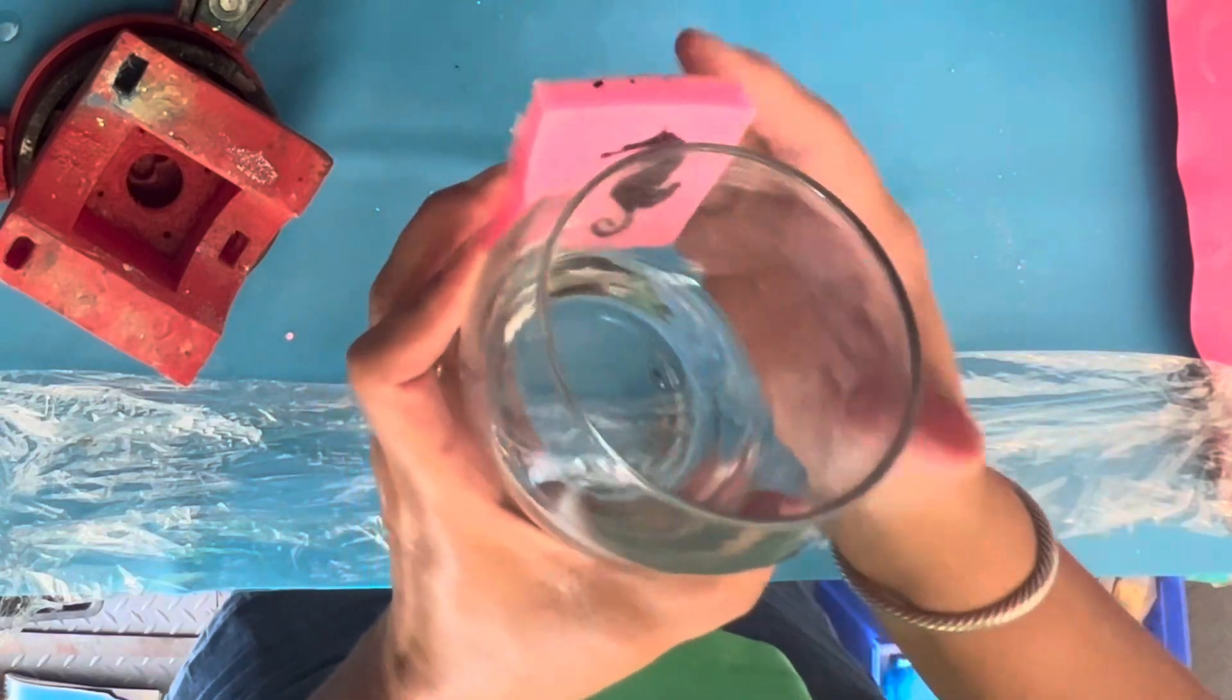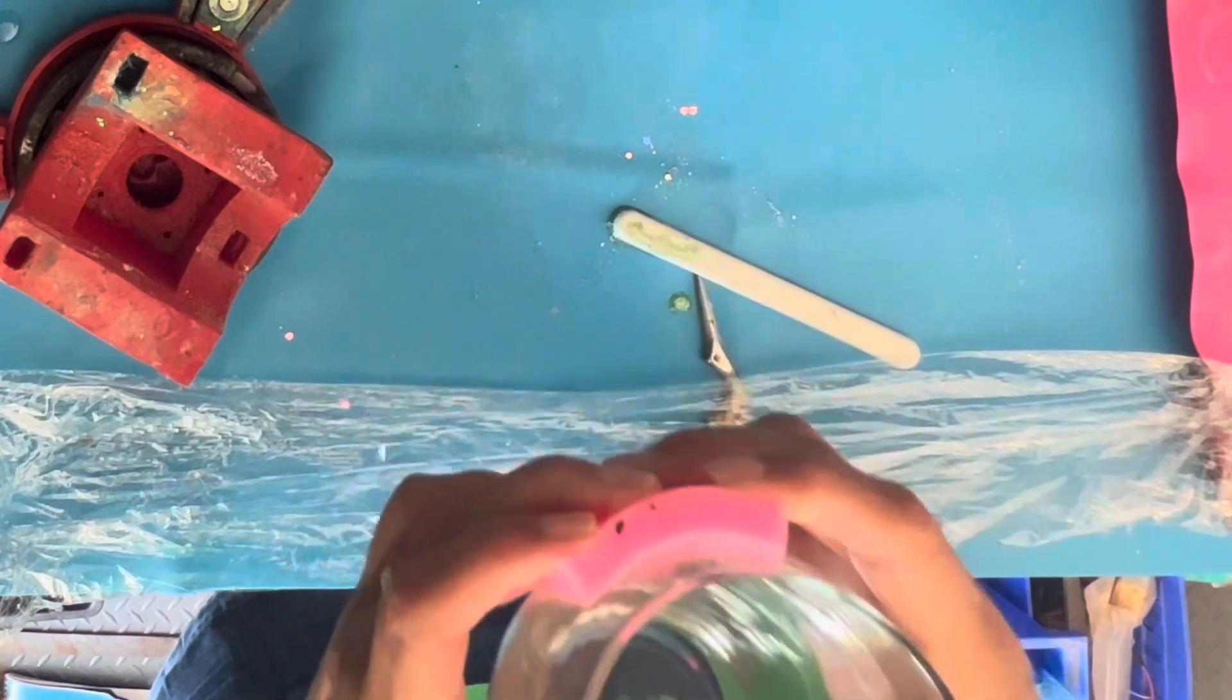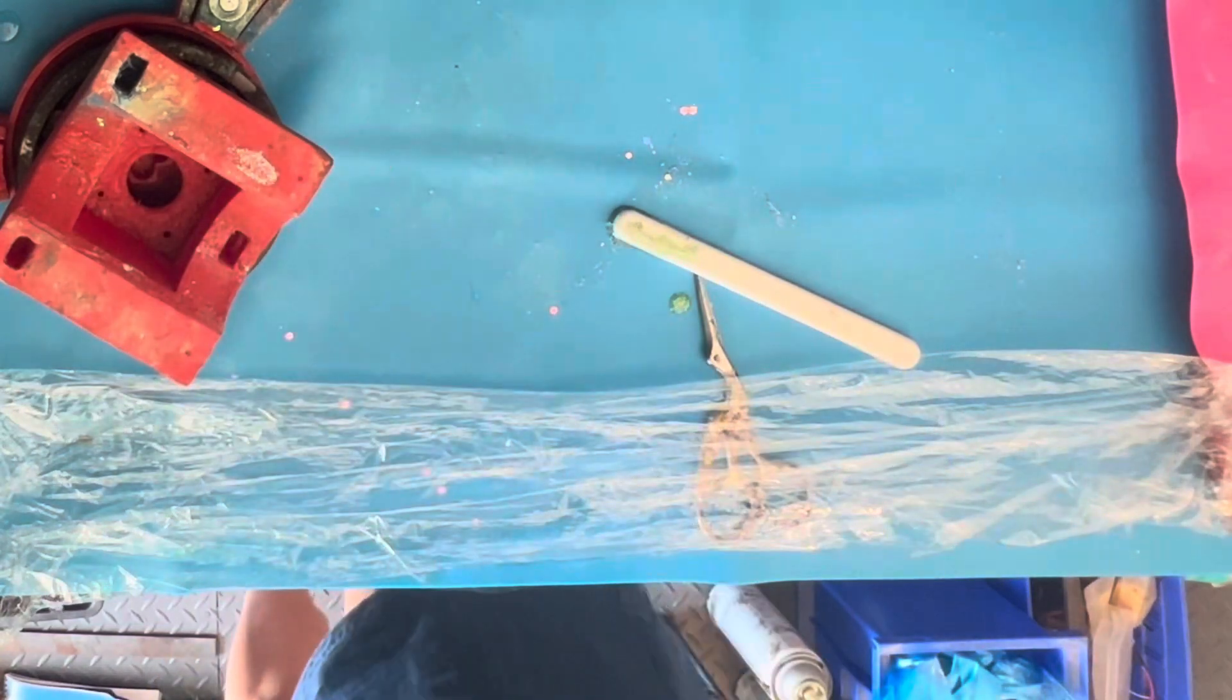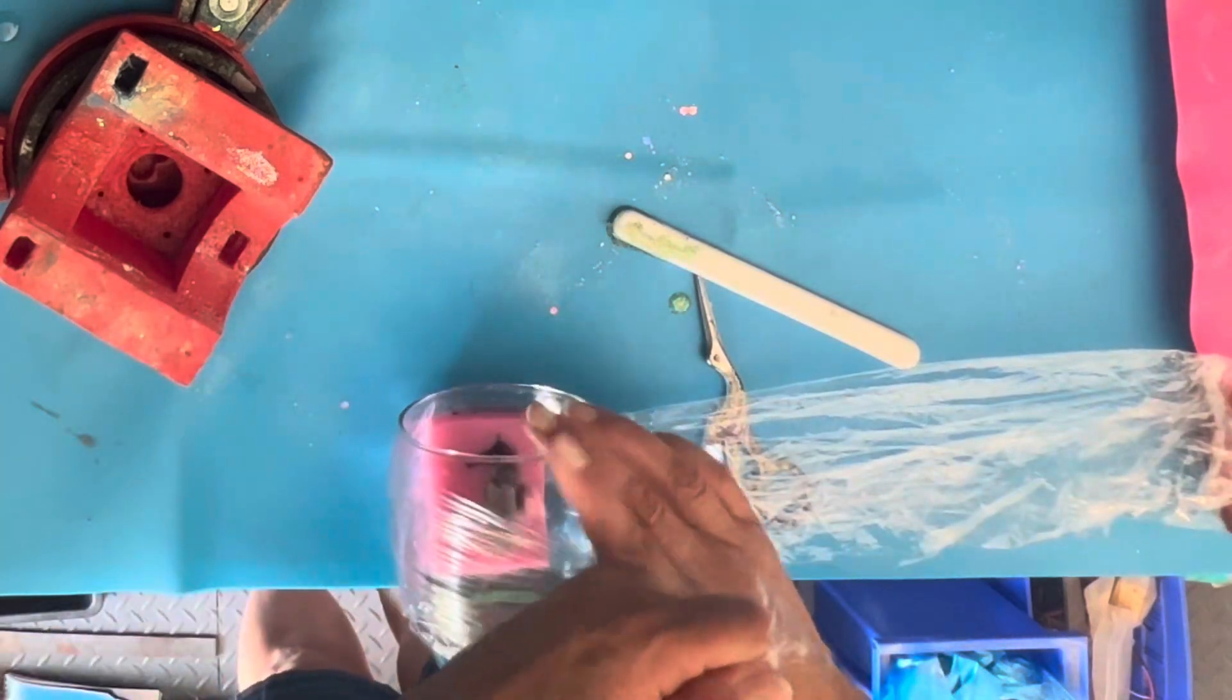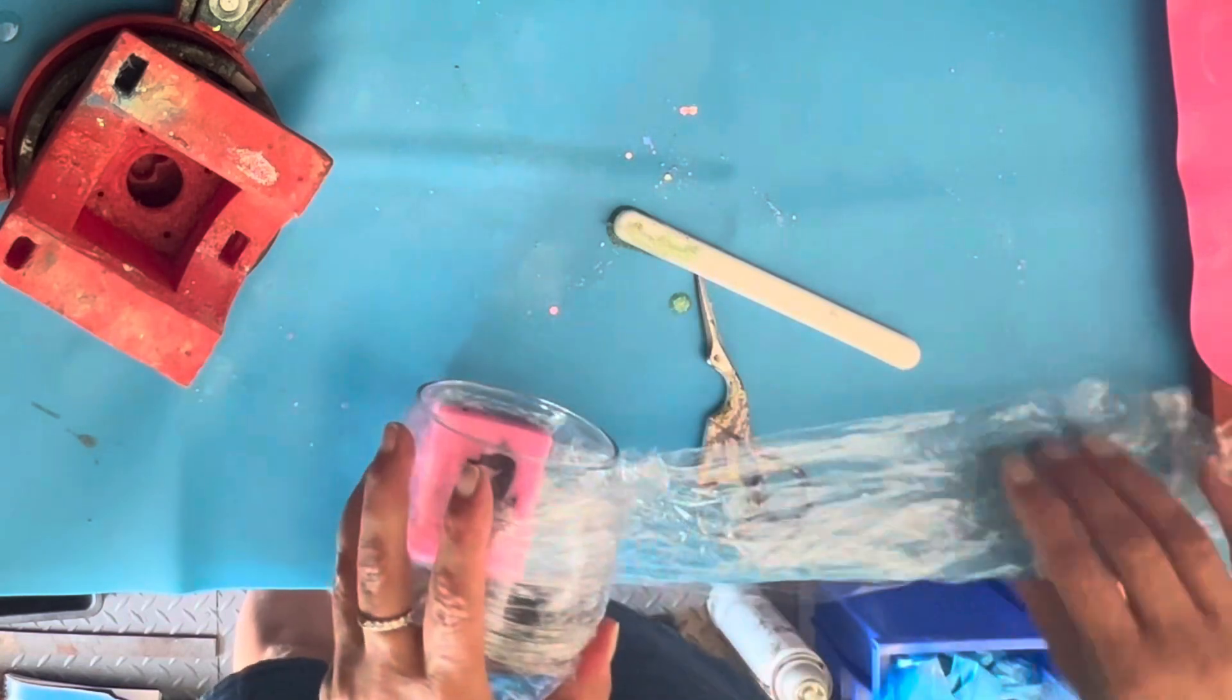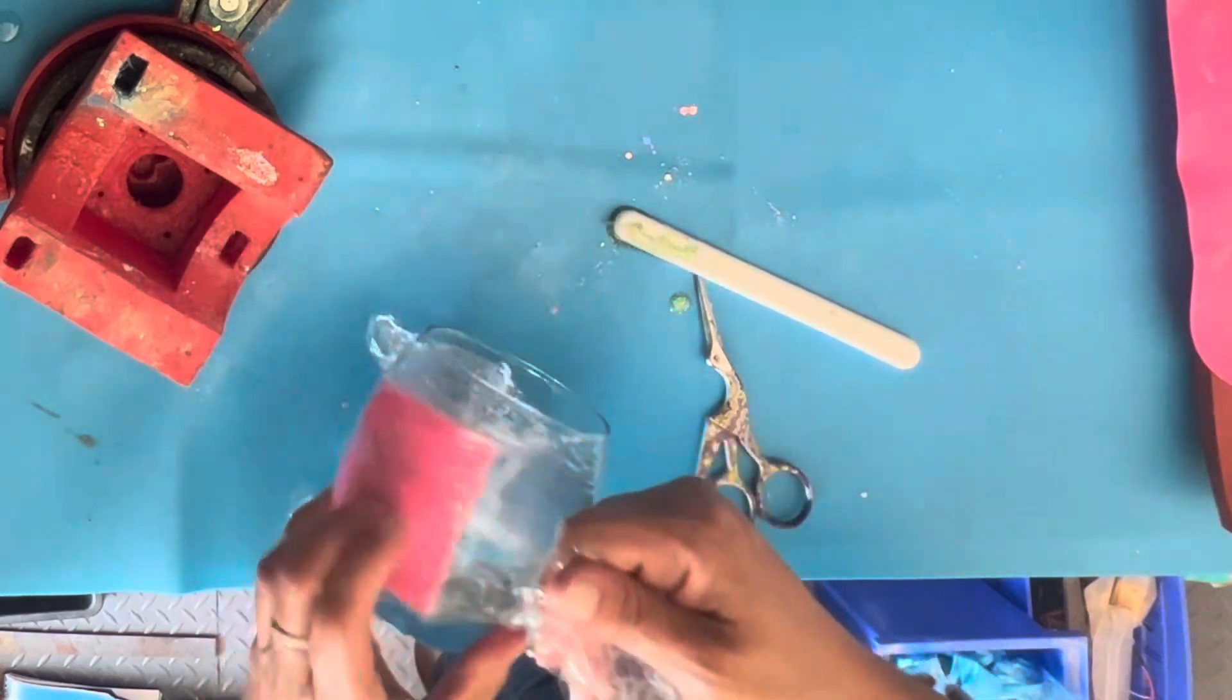Now, one of the things is when you're putting it on, you can look inside your glass and you can actually see how you're lining it up once you stick it. Now, once you stick it, you're not moving it because it'll be all gross. So just kind of hold it up, look inside and make sure that it's good before you stick it.